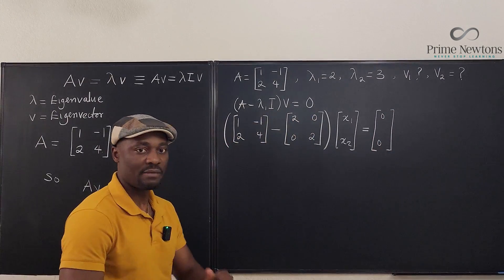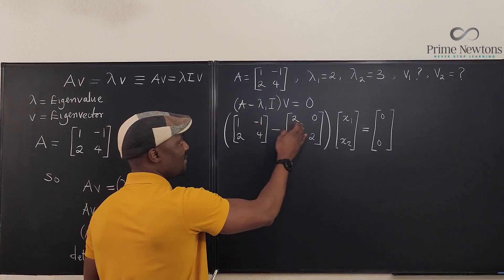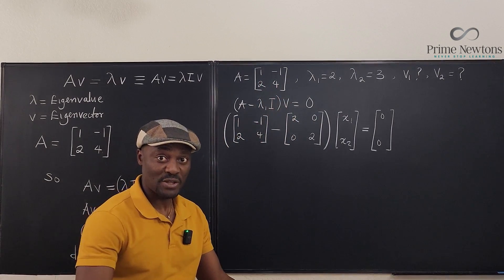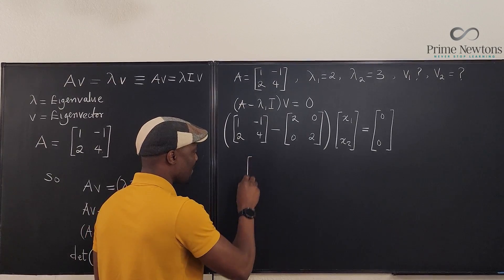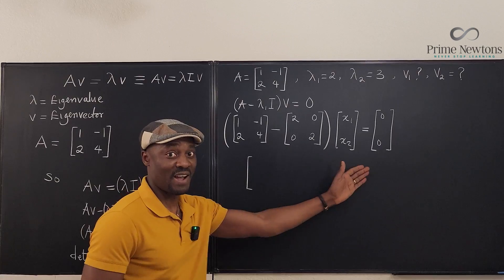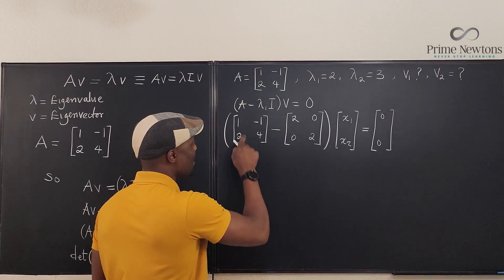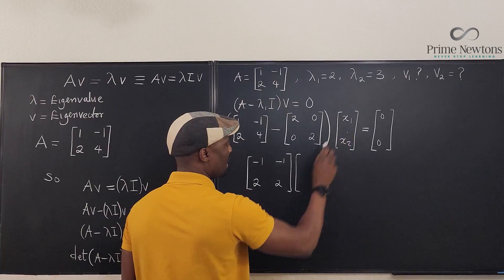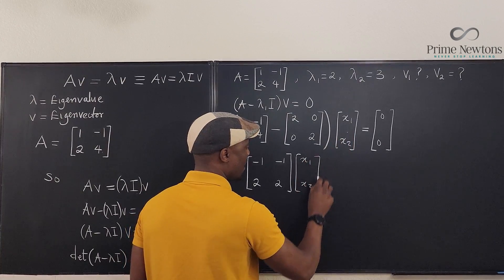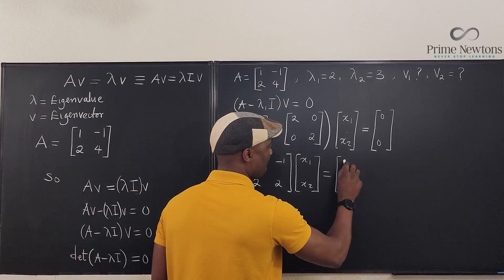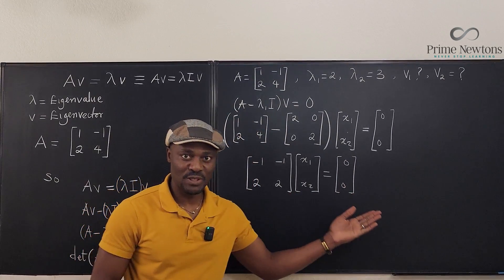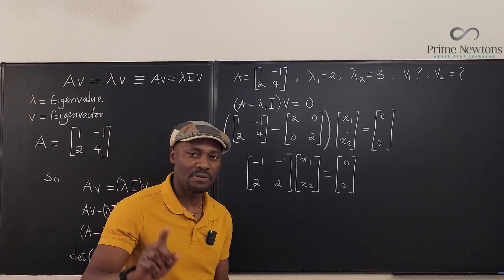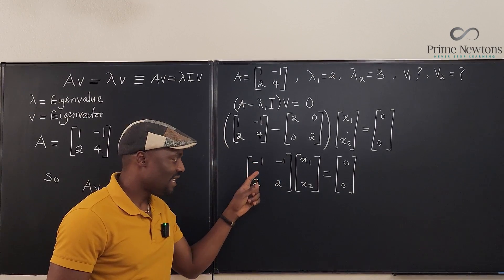Subtracting gives us the matrix [-1, -1; 2, 2] times [x₁; x₂] = [0; 0]. Notice that the second row is a multiple of the first row — multiply the first row by -2 and you get the second row. This is exactly what we want: both rows give the same equation, confirming the system is consistent.